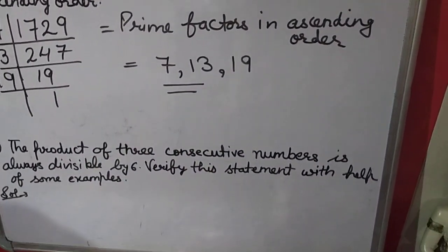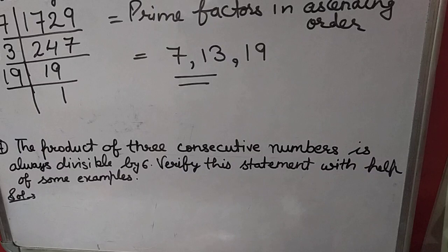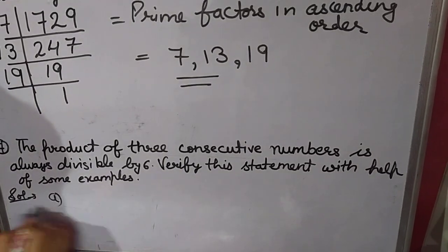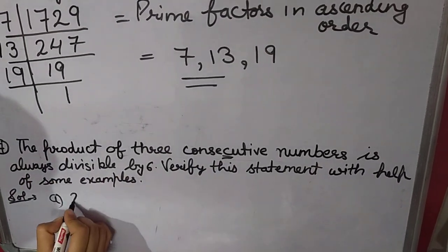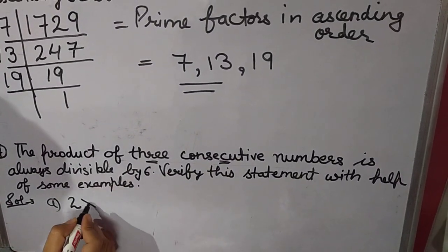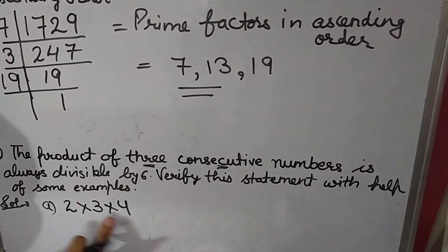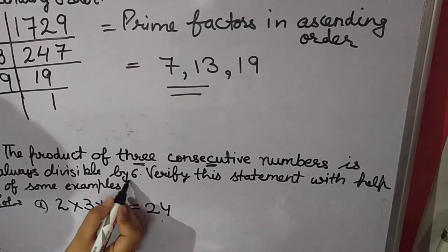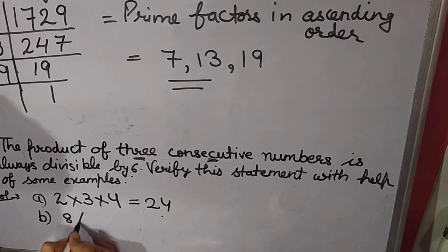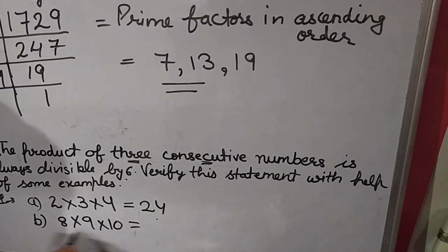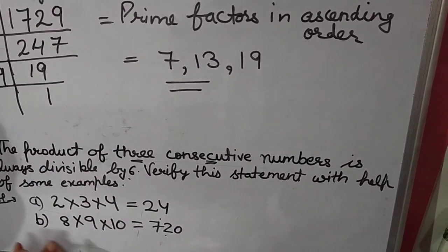The product of 3 consecutive numbers is always divisible by 6 — verify this with examples. First example: take 2, 3, and 4. Their product is 2 × 3 × 4 = 24, and 24 is divisible by 6. Second example: take 8, 9, and 10. Their product is 720, and 720 is also divisible by 6. You can make more examples of this type.